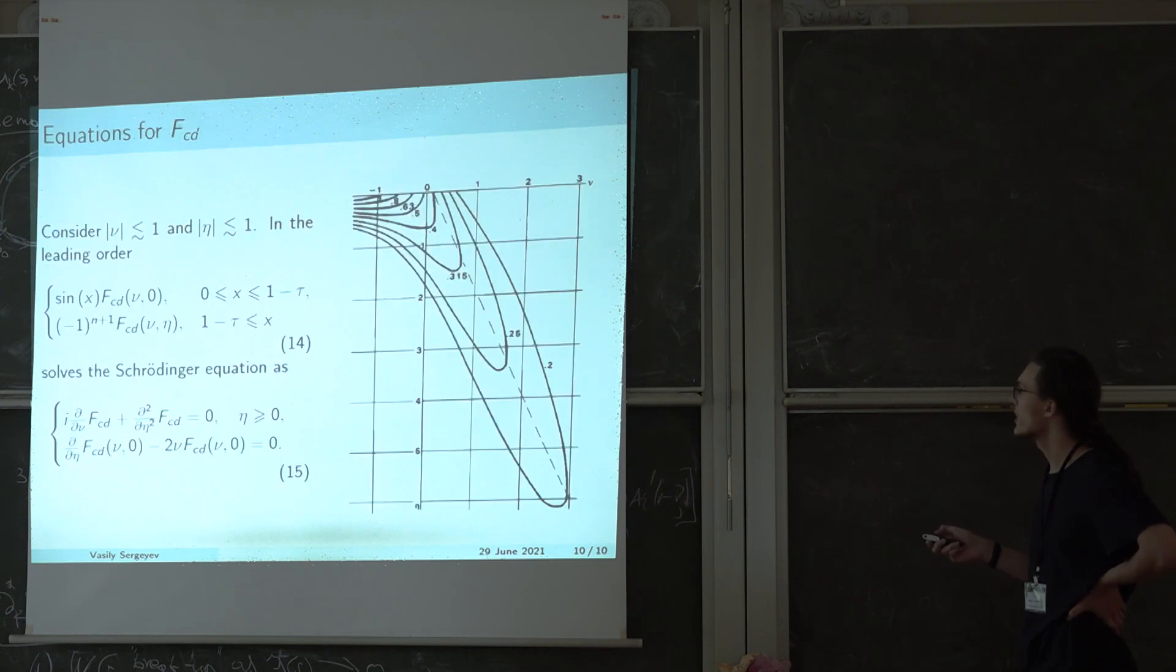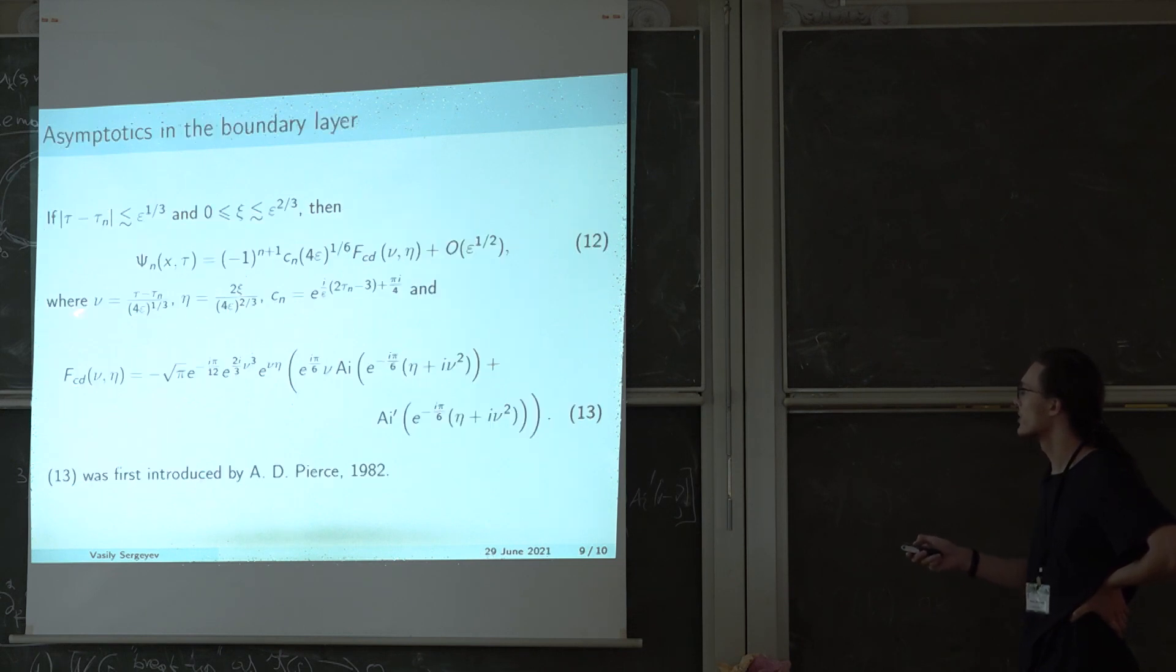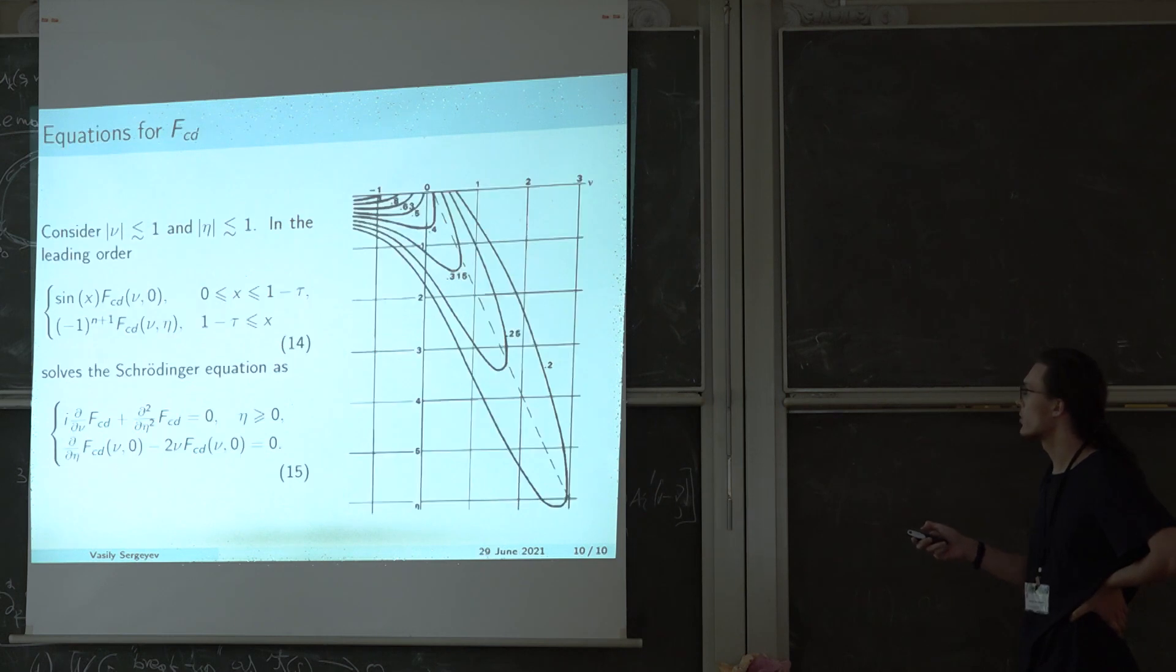This function f satisfies a certain model problem, a set of equations 15. And if we consider nu and eta boundary layer coordinates to be of the order of one or smaller, so if we are in the boundary layer, then our adiabatic normal mode psi n in the leading order has the following asymptotics.